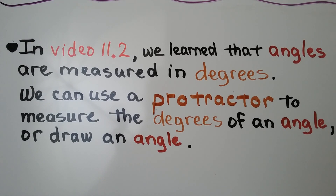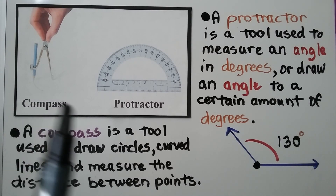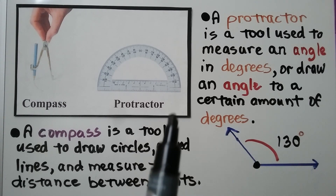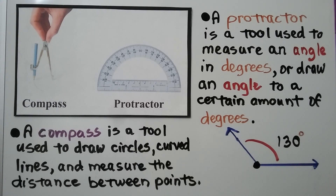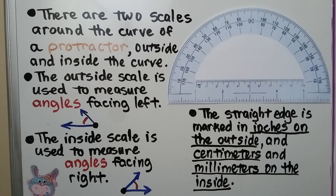This is a picture of a compass and this is a picture of a protractor. A compass is a tool used to draw circles, curved lines, and to measure the distance between points. A protractor is a tool used to measure an angle in degrees or draw an angle to a certain number of degrees.